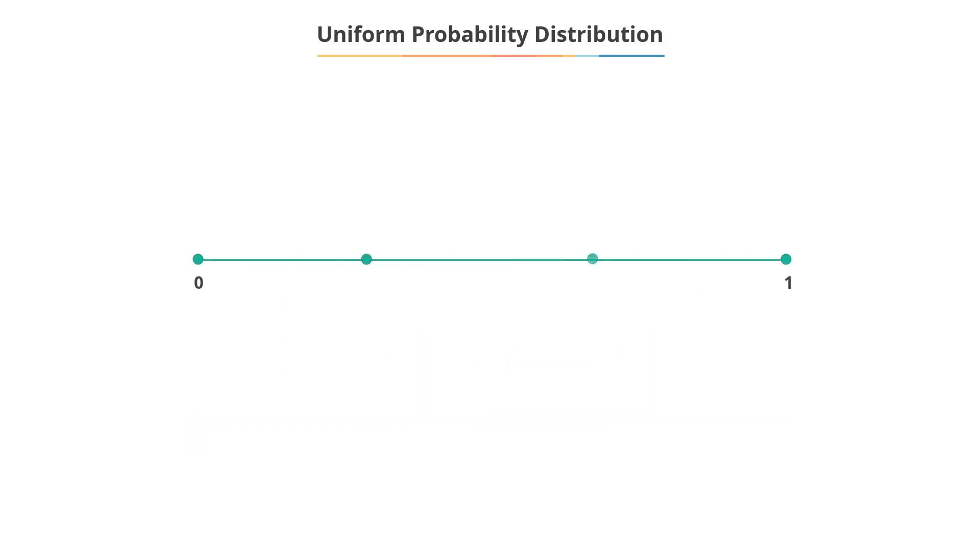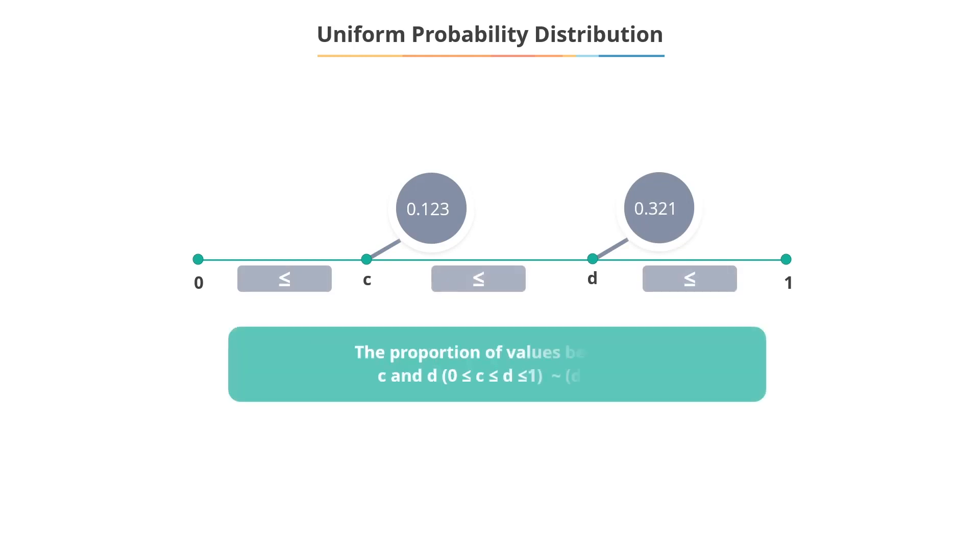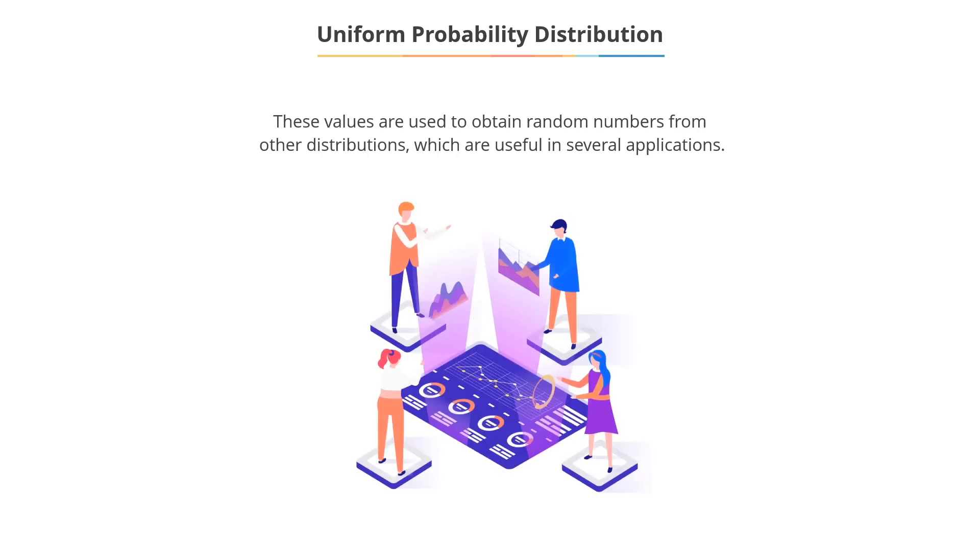Thus, the proportion of values lying between c and d, where zero is less than or equal to c, which is less than or equal to d, which is less than or equal to one, would be approximately d minus c. These values can be used to obtain random numbers from other distributions besides the uniform distribution. Random numbers are useful in several applications.